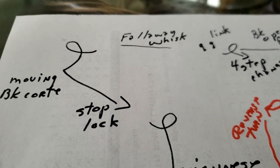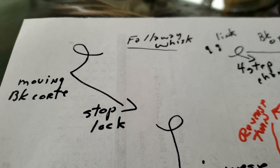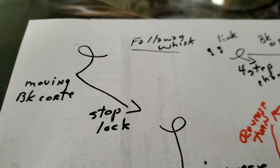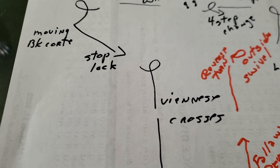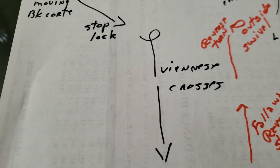Now this is the group that I had Mengu demonstrate. That takes us around out of the corner and the stop lock is coming back on the diagonal. You're backing diagonal center. That moves into the Viennese crosses. And you can see again we're not hugging the wall. We're coming down close to the center of the floor. You have your oversway and your drag and everything that happens there.